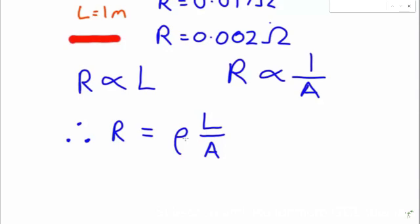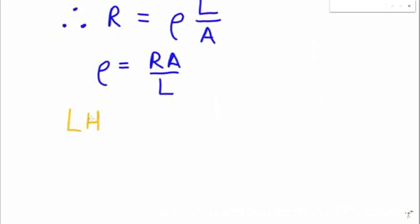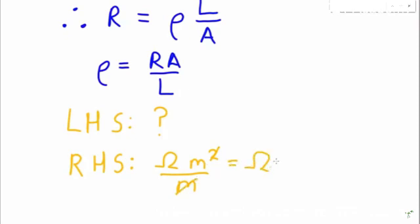So we can figure out the units of resistivity using this equation. First, let's rearrange. We know that the units on both sides of the equation must be the same. So what are the units on the left hand side? We don't know. But on the right hand side, we have resistance is ohms, area is meters squared, and that's all divided by meters. So if I cancel out the units, then I get the units on the right hand side are ohms times meters.